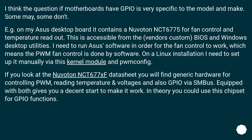Whether motherboards have GPIOs is very specific to the model and make — some may, some don't. For example, my ASUS desktop board contains a Nuvoton NCT6775 for fan control and temperature readout. This is accessible from the vendor's custom BIOS and Windows desktop utilities. I need to run ASUS software for fan control, meaning PWM fan control is done by software. On a Linux installation I need to set it up manually via a kernel module and pump config. Looking at the Nuvoton NCT677XF datasheet, you'll find generic hardware for controlling PWM, reading temperature, voltages, and also GPIO functions. Equipped with both gives you a decent start. In theory you could use this chipset for GPIO functions.